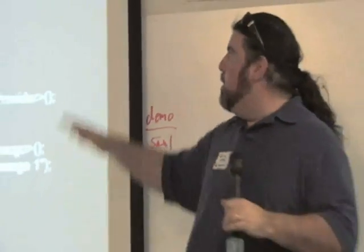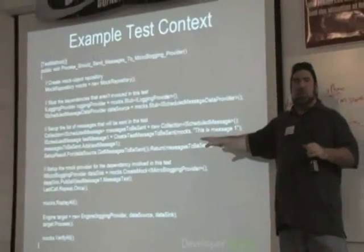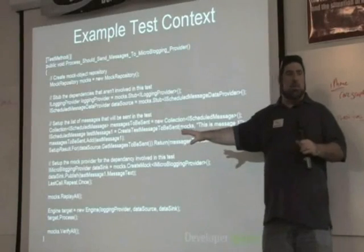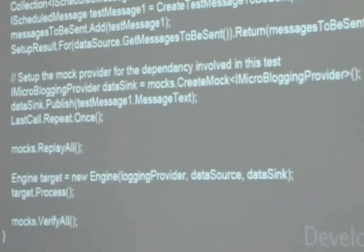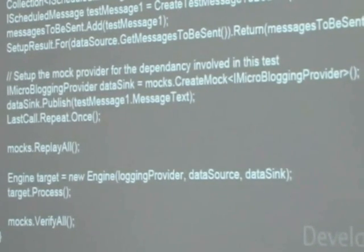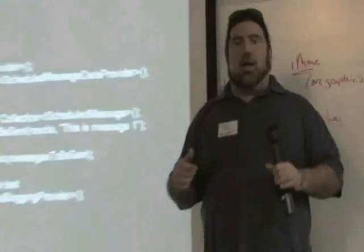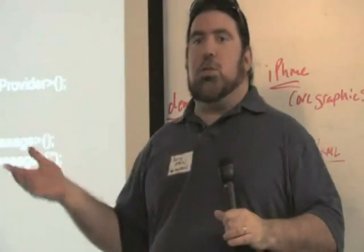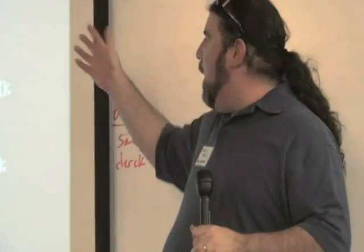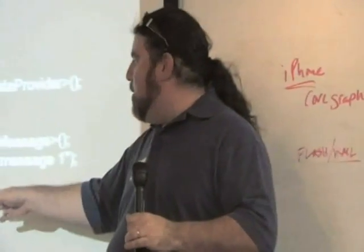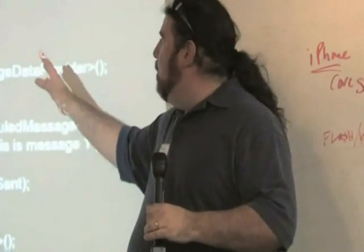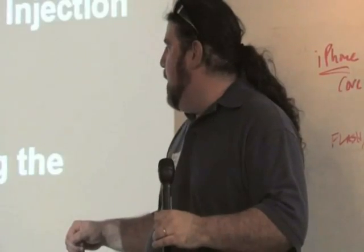Here's an example of how that actually looks in real life. This is a test context and this is the test for the engine you saw in the previous slide. Most of this is just setting up those dependencies. Down the bottom is where the work is happening — there are three providers being passed in on the constructor of the engine, and then the engine's process method is called. I'm using a mock framework to generate the dependencies on the fly from the interface. This allows us to create dependencies that don't actually touch the database or Twitter, making it very simple and easy to test and maintain.